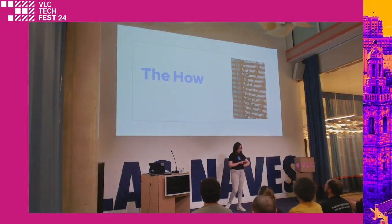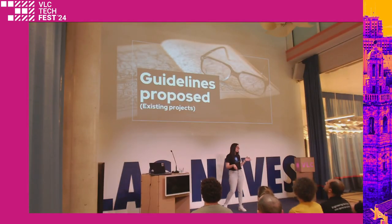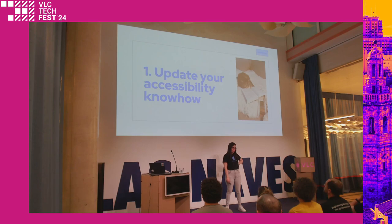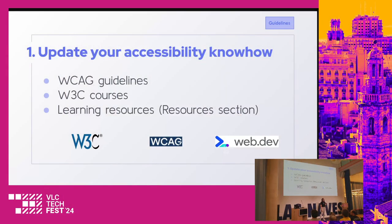Now the 'how' — how can you implement accessibility? I'm going to propose some guidelines. The first is to update your accessibility know-how. If you don't know what to do, how can you do it? You can use the WCAG guidelines, which explain in each case how to reach compliance. There are also W3C courses. My favorite is web.dev from Google, which has a dedicated accessibility section covering all web elements, common errors, and how to fix each one.